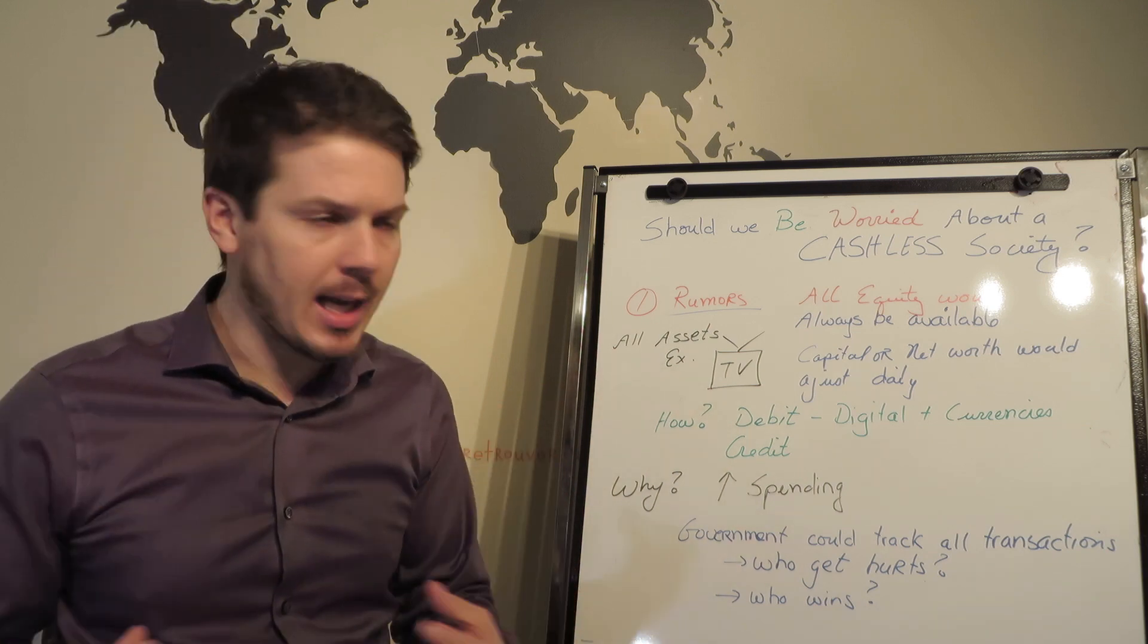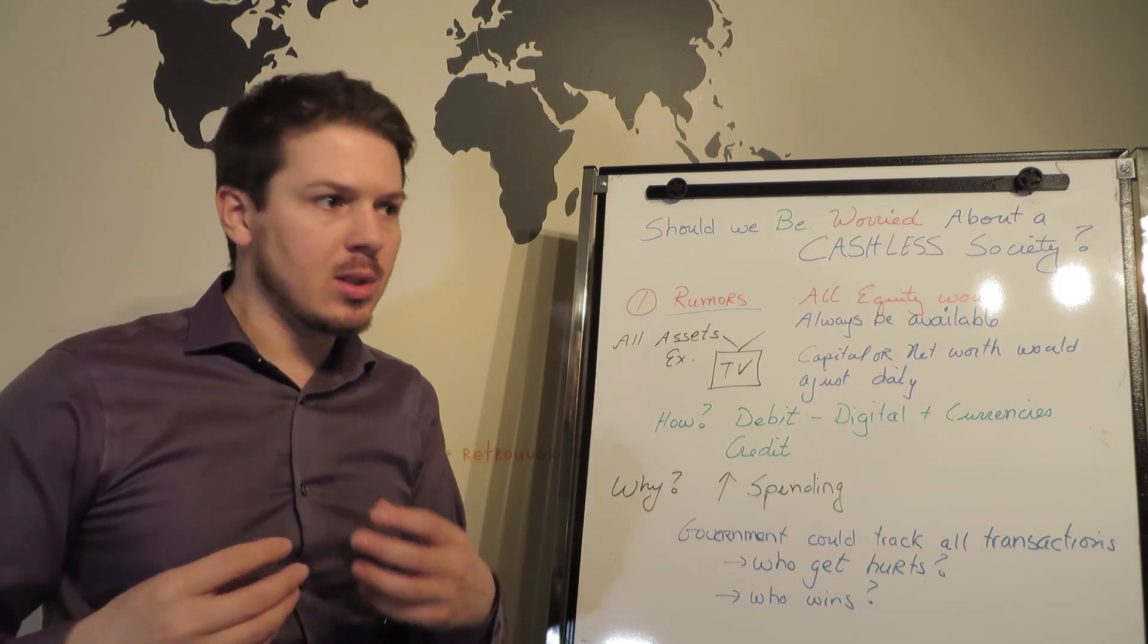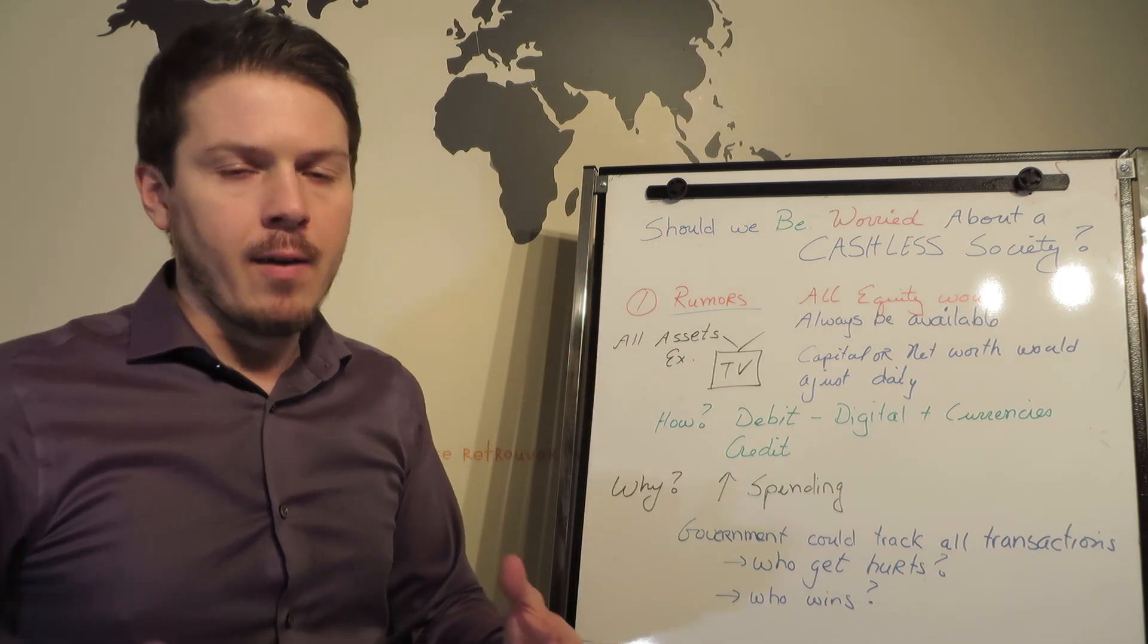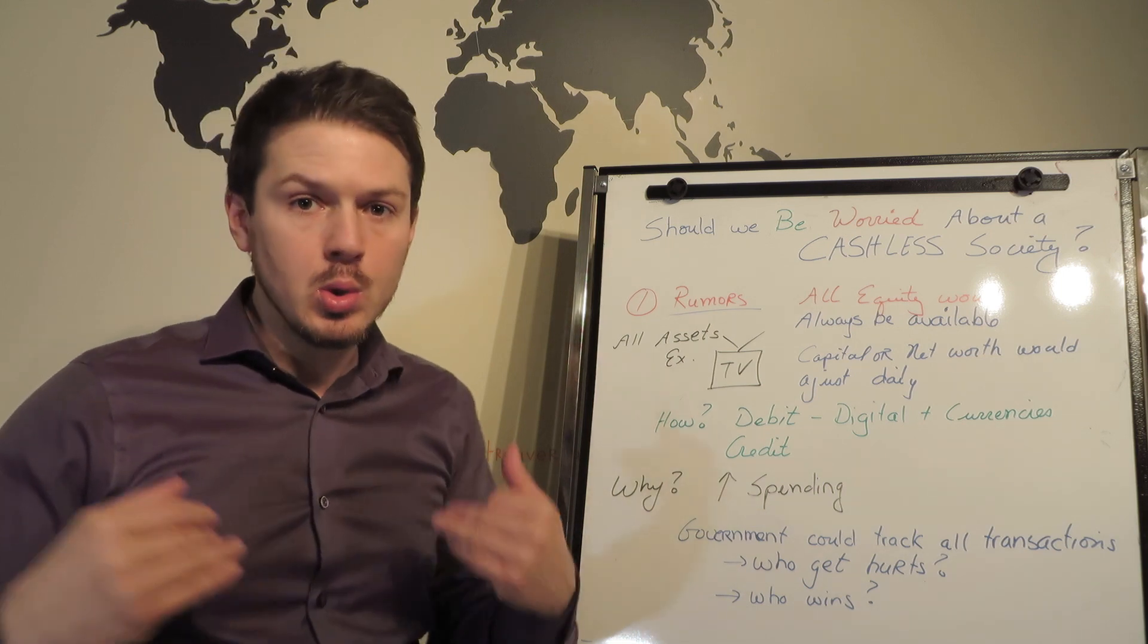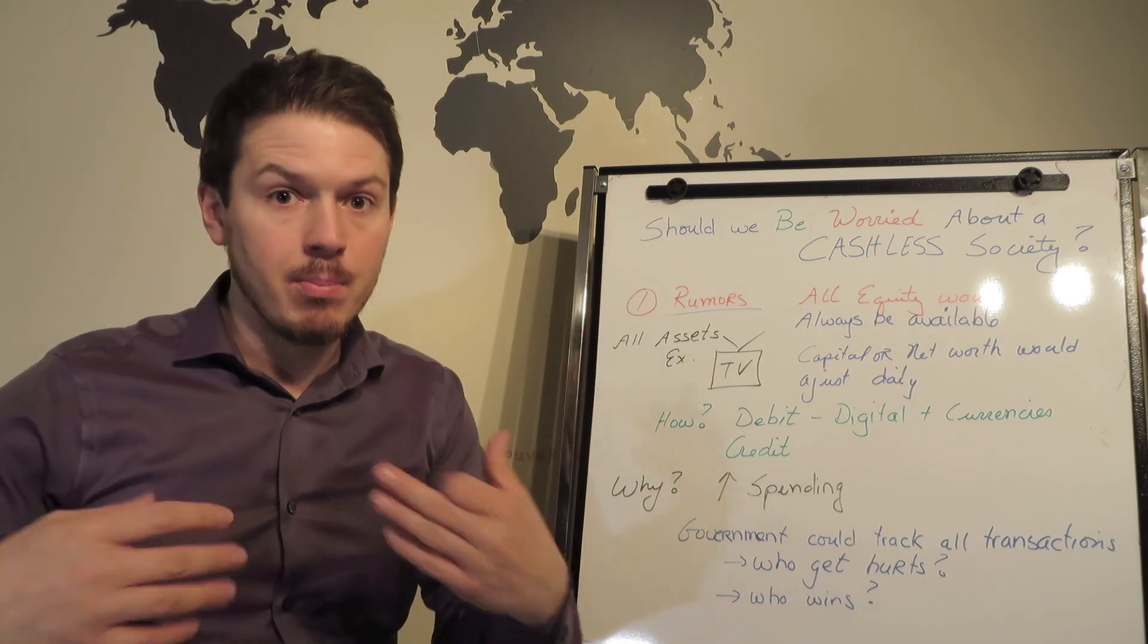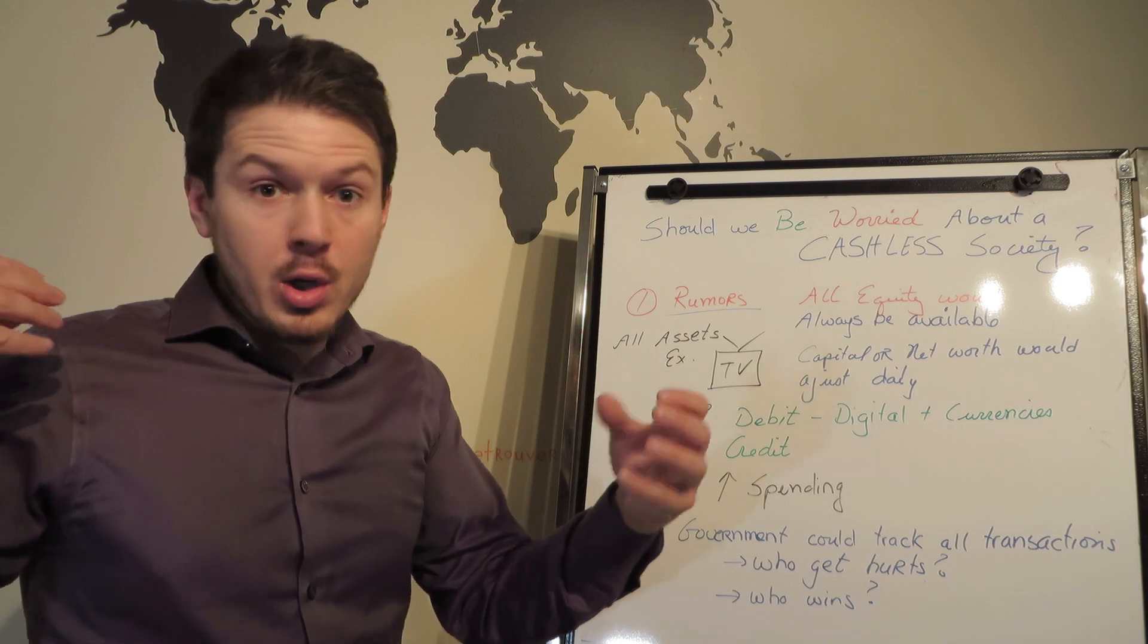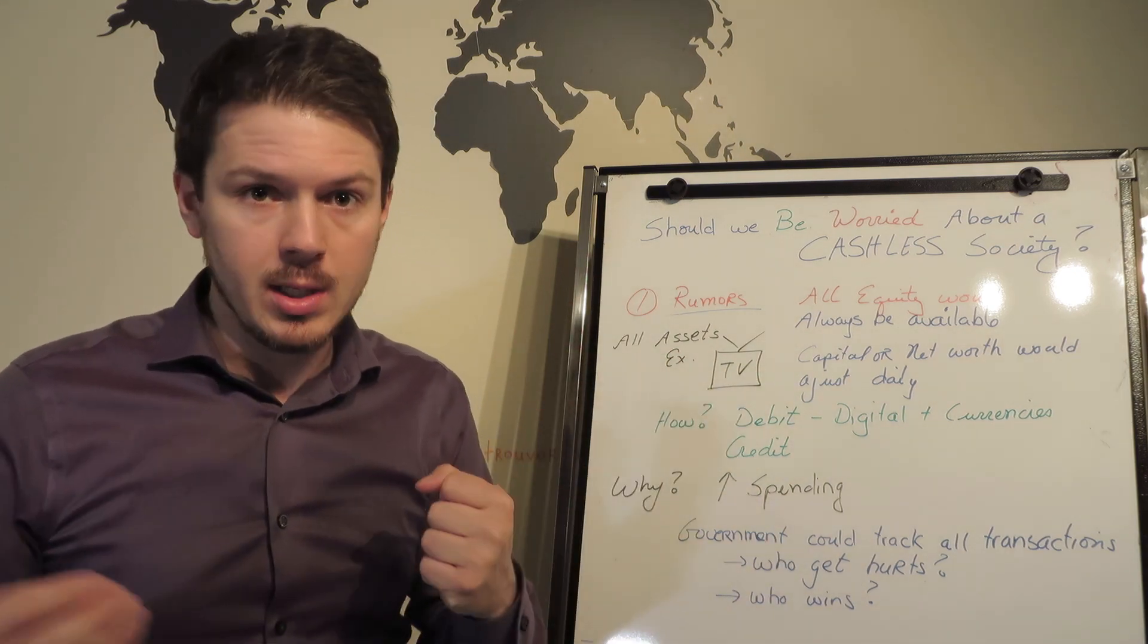So the goal of this cashless society is to make everything accessible because when you have a house that's worth something, your car is worth something, if you pay it down faster and it's still worth $16,000, you could have access to that money and spend it and put it into the economy. So your net worth would fluctuate every day, so your credit would fluctuate every day.